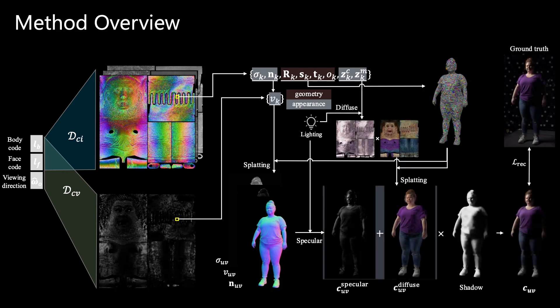Lastly, we introduce a shadow network to predict fine-grained shadows, and compose the final image taking specular appearance, diffuse appearance, and shadow into account. The model is optimized with photometric loss and auxiliary regularization losses.